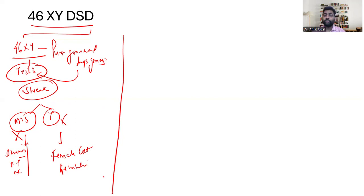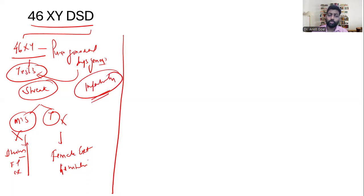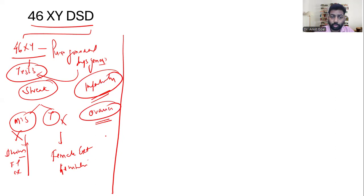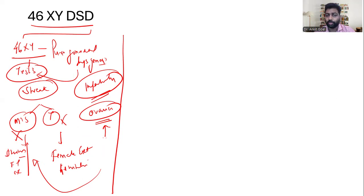These patients with 46XY pure gonadal dysgenesis will have female external genitalia with a uterus and fallopian tubes present, so they are raised as a normal girl child. They present later with infertility or delayed puberty. On evaluation and karyotyping, they are found to be 46XY. Since they have no ovaries, infertility cannot be reversed easily, but because a uterus is present, oocyte transfer can allow pregnancy.